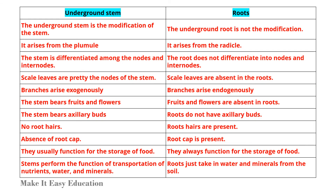The underground stem is a modification of the stem, whereas the underground root is not a modification. The stem arises from the plumule; the root arises from the radicle. The stem is differentiated into nodes and internodes, while the root does not differentiate into nodes and internodes. Scale leaves are present at the nodes of the stem, but scale leaves are absent in the roots.